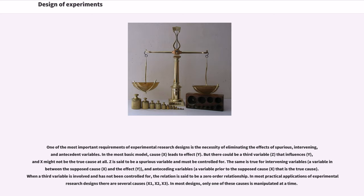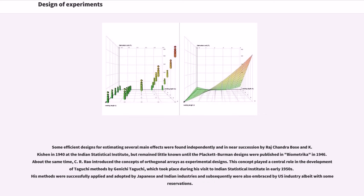In most practical applications of experimental research designs there are several causes, X1, X2, X3. In most designs, only one of these causes is manipulated at a time. Some efficient designs for estimating several main effects were found independently and in near succession by Raj Chandra Bose and K. Kishen in 1940 at the Indian Statistical Institute, but remained little known until the Plackett-Burman designs were published in Biometrika in 1946. About the same time, C. R. Rao introduced the concepts of orthogonal arrays as experimental designs. This concept played a central role in the development of Taguchi methods by Genichi Taguchi, which took place during his visit to Indian Statistical Institute in early 1950s.